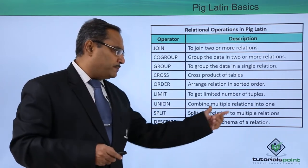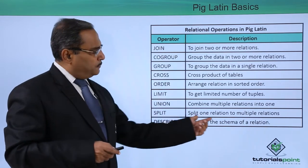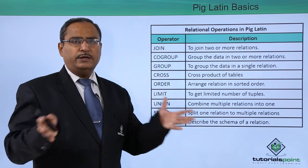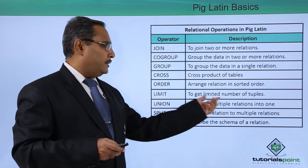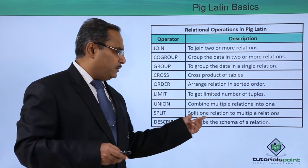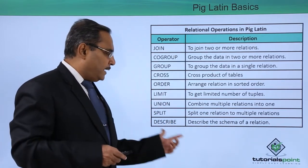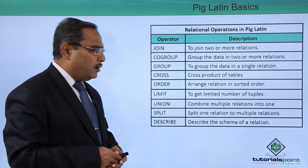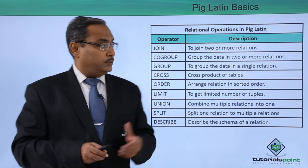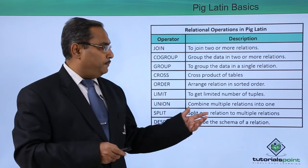UNION combines multiple relations into one. SPLIT divides one relation into multiple relations. So UNION combines multiple relations to one, while SPLIT does the opposite, dividing one relation to multiple. DESCRIBE describes the schema of a relation. These are the different relational operators available in Pig Latin.